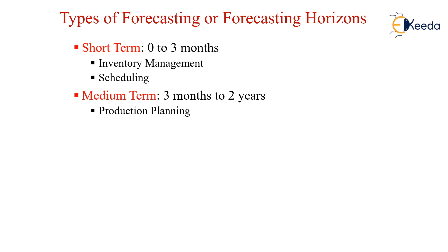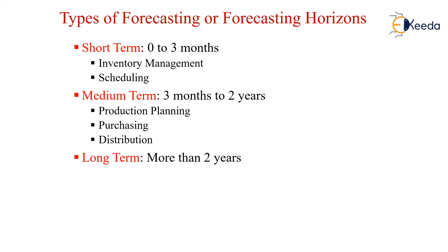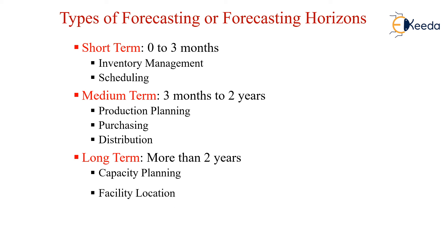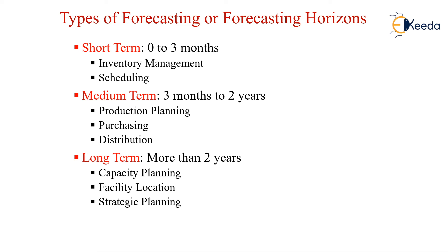Medium term forecasting covers 3 months to 2 years, where production planning, purchasing, and distribution occur. If planning is done for more than 2 years, then it is called long term forecasting, covering areas such as capacity planning, facility location, and strategic planning.